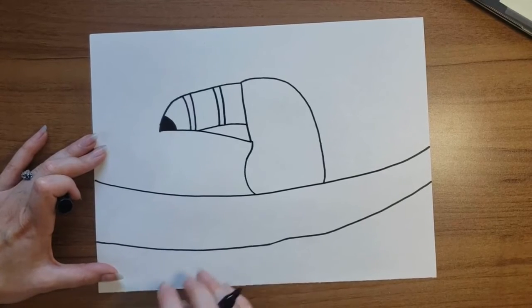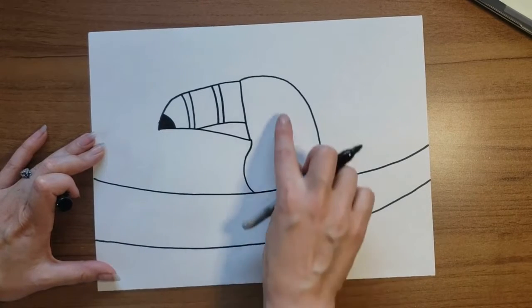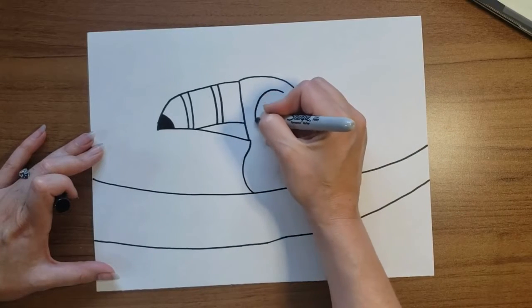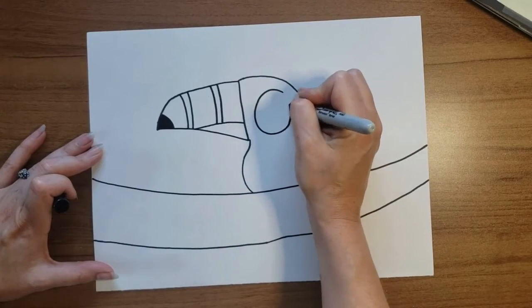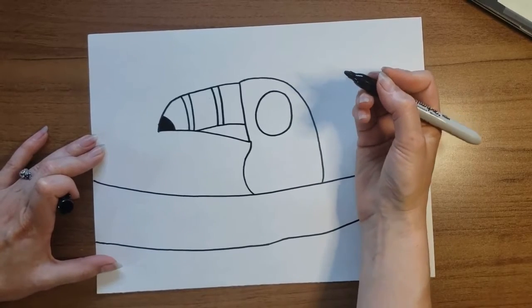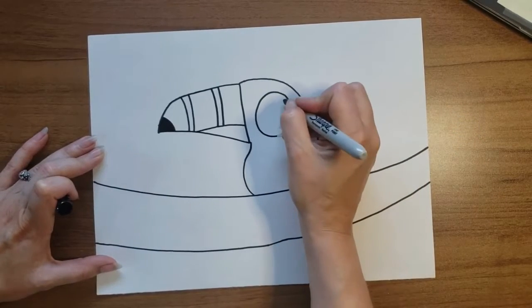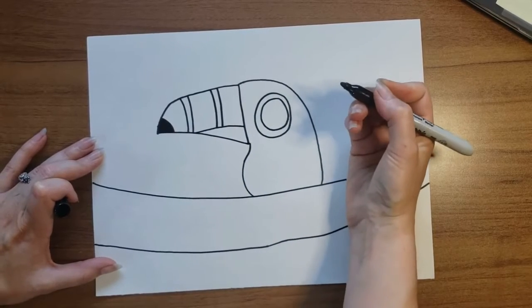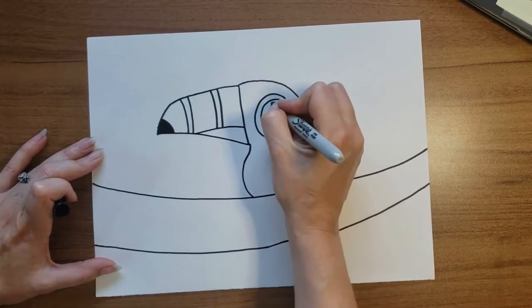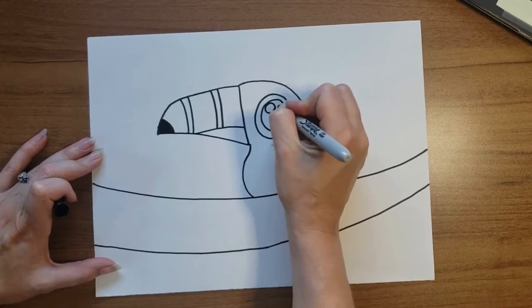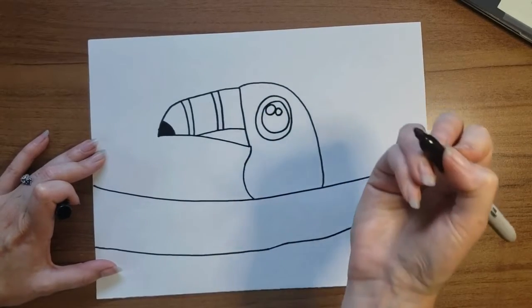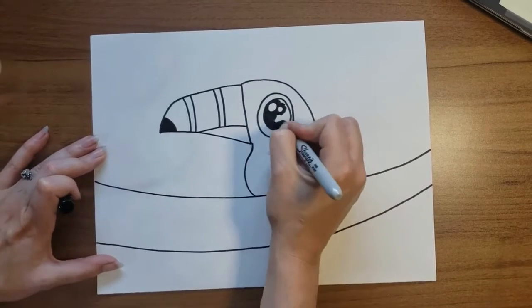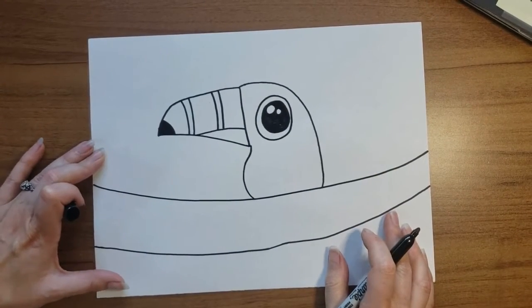Now where is our toucan going to look at us from? An eyeball! I'm going to draw a big circle and then a smaller circle inside of that. I always like to add highlights, so I'm going to add two little dots for light and then I will color the pupil black as well.